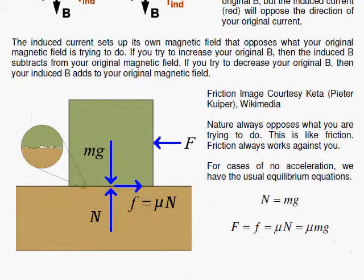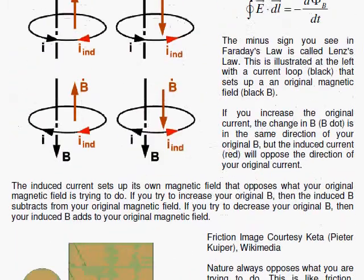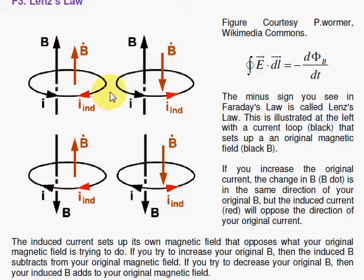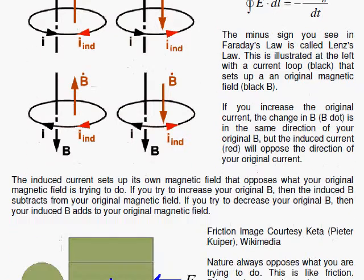Nature always opposes you. This is not a new thing. If you push a block to the left, the friction wants to push to the right. So up here, when you try to increase the current in one direction, you get an opposition and vice versa. And this is Lenz's law, this opposition.